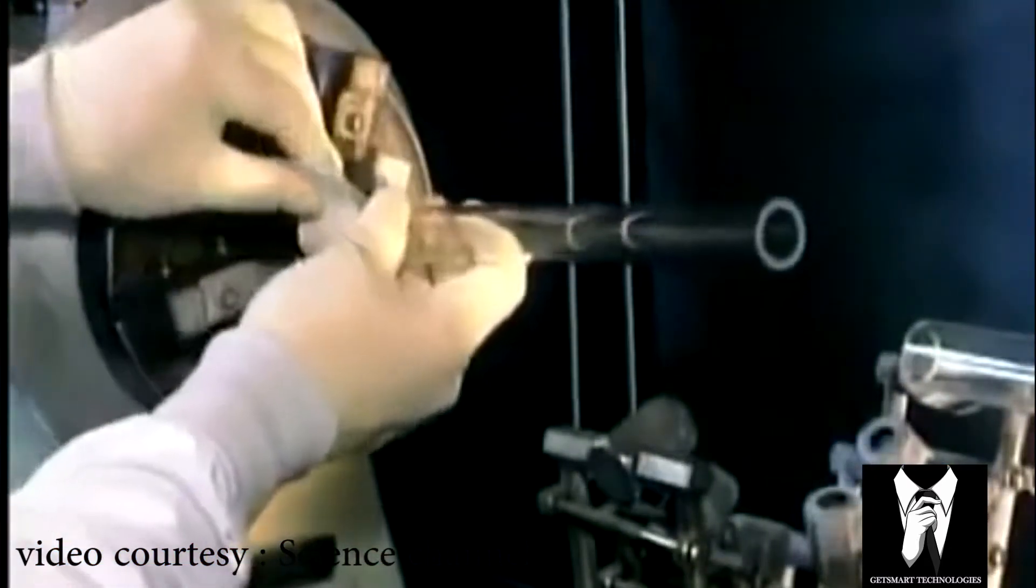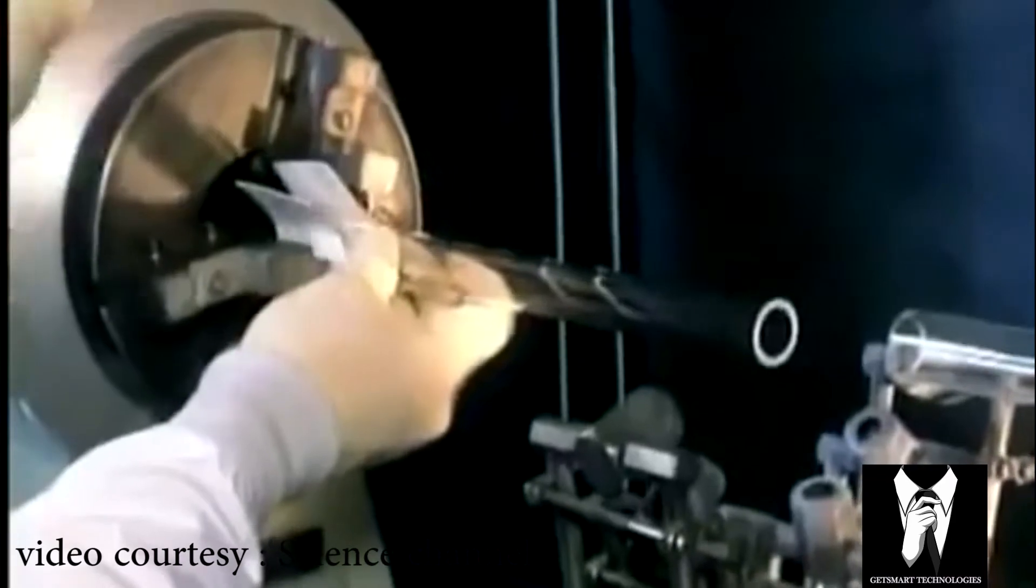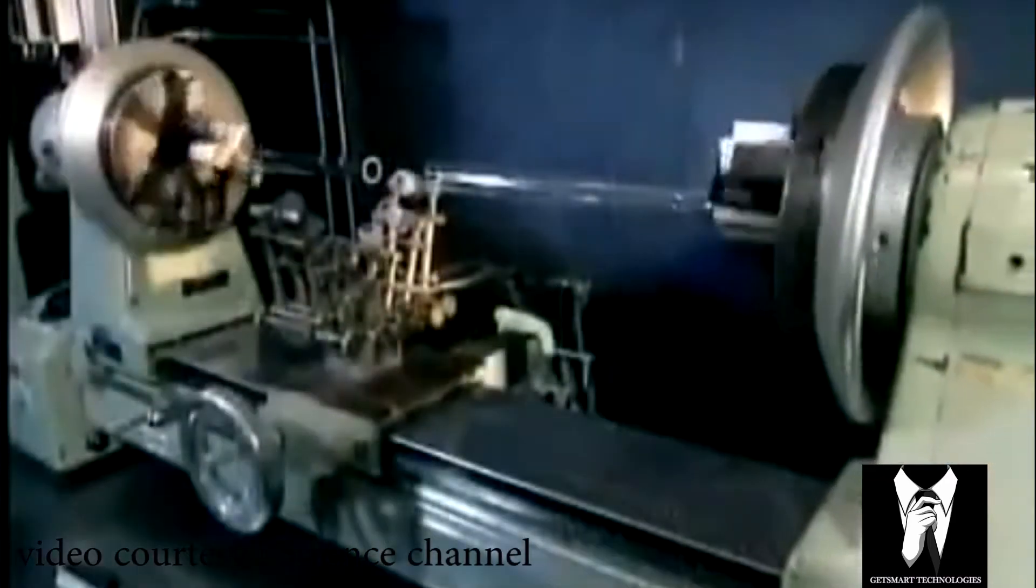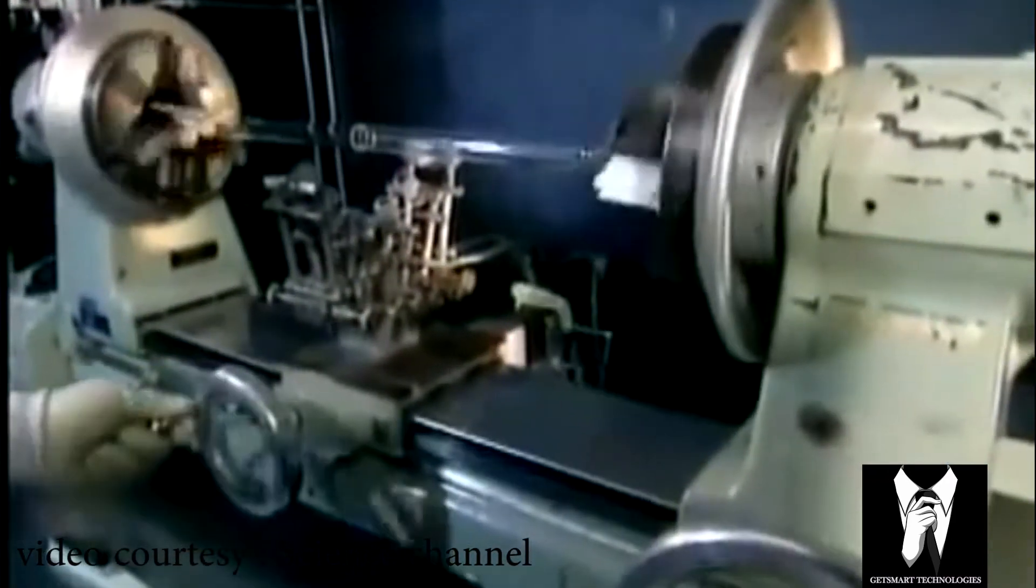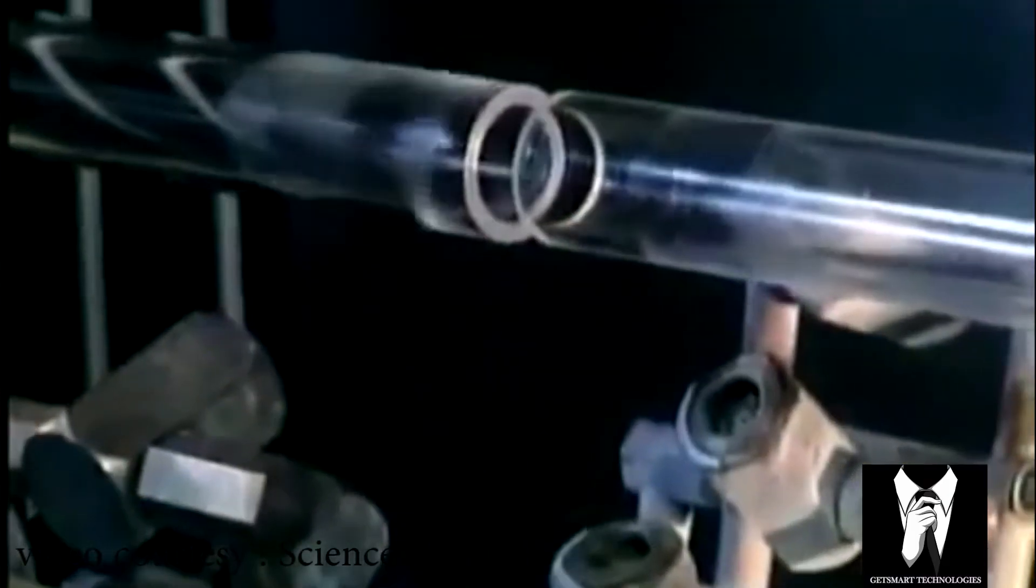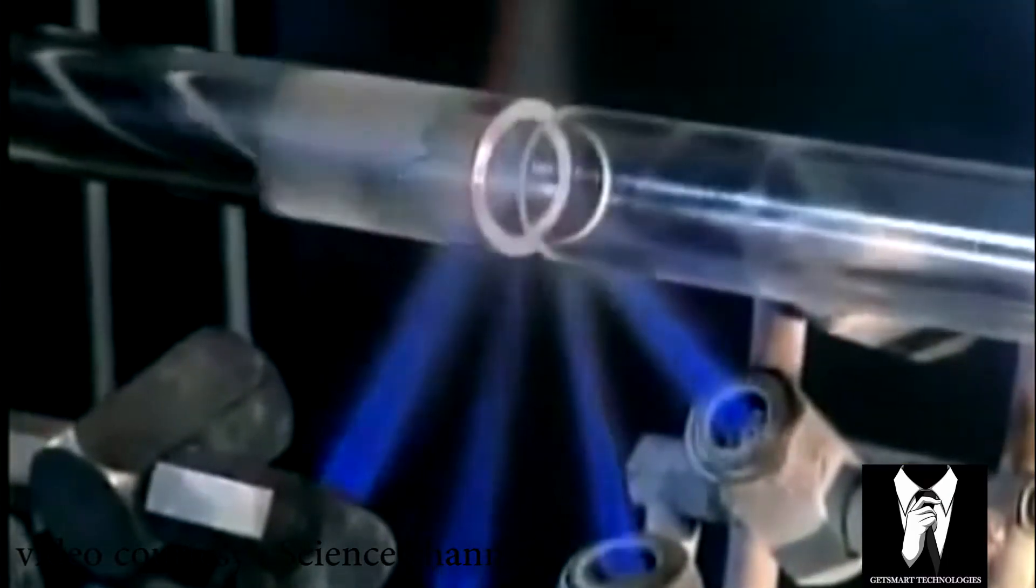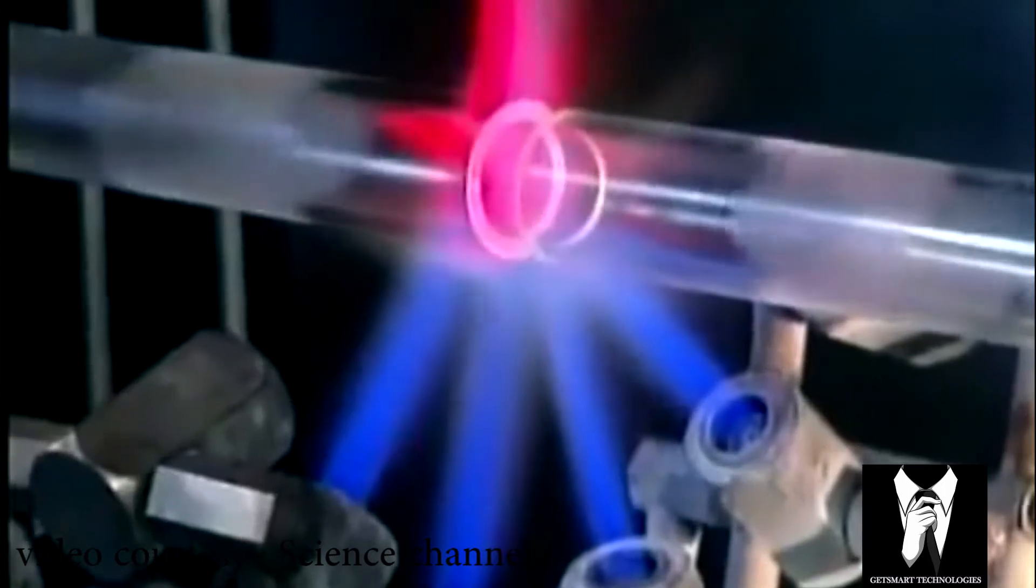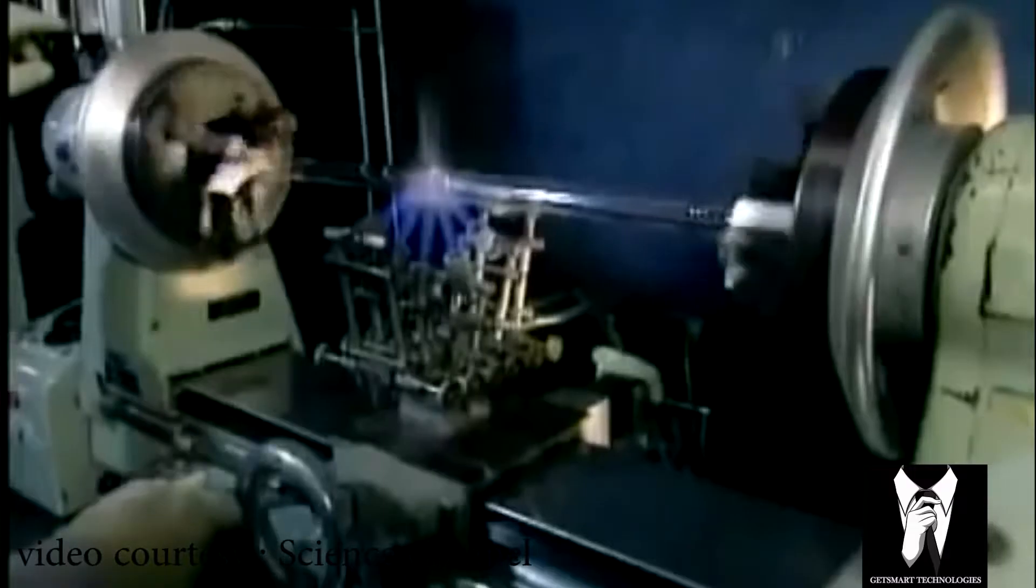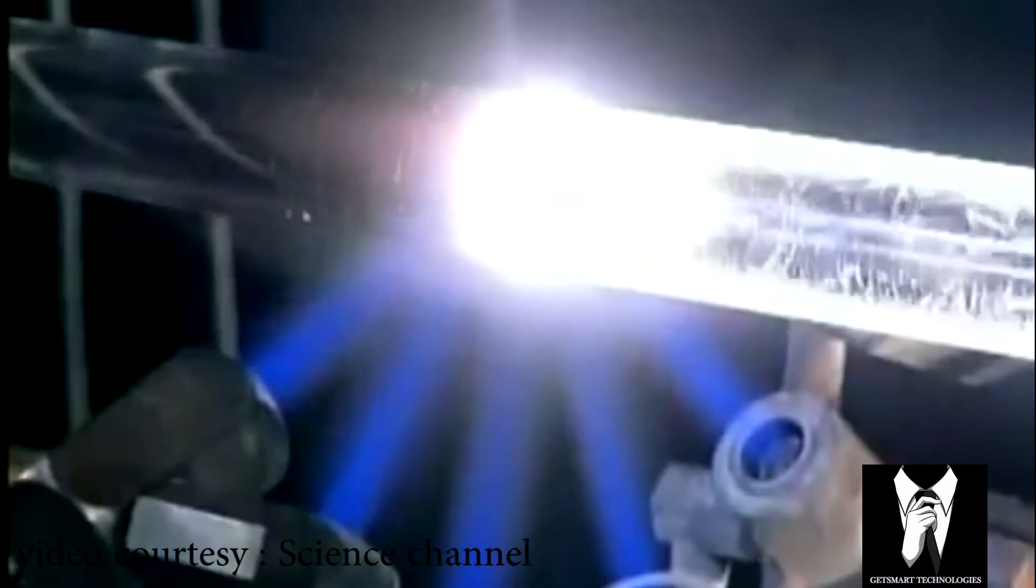Then they set it to each end of a lathe. As the tubes spin, they are heated with a hydrogen-oxygen flame. When the glass turns white, it's getting close to hitting peak temperature. At about 3500 degrees, the two tubes fuse together.